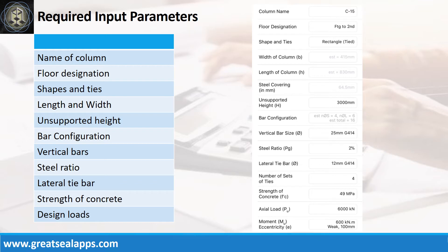Enumerate input parameters required. Column name C15, floor designation footing to second, shape and ties rectangle and tied, steel covering 64.5 mm.